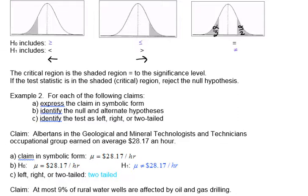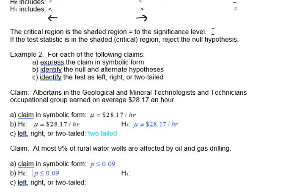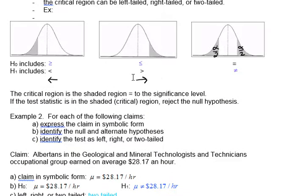For the second claim: at most nine percent of rural water wells are affected by oil and gas drilling. Symbolically, 'at most' is less than or equal to, so the null hypothesis is H0: p ≤ 9%. The opposite of 'at most' is 'more than,' so the alternate hypothesis is H1: p > 9%. Since the null is less than or equal to and the alternate is greater than, we're looking at a right-tailed test.